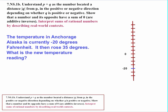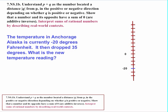Let's try a temperature example. The temperature in Anchorage is minus 20 degrees Fahrenheit, and it then rose 35 degrees. What's the new temperature? Starting at negative 20 and traveling a distance of 35 in the positive direction puts us at positive 15 degrees Fahrenheit.